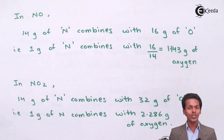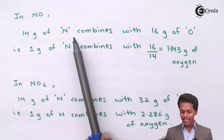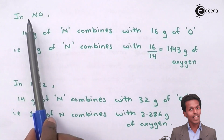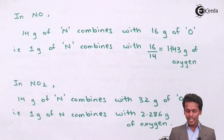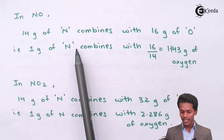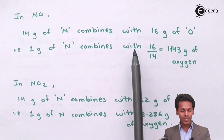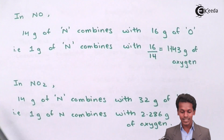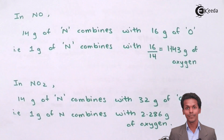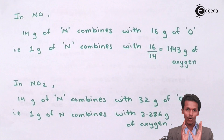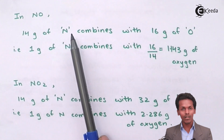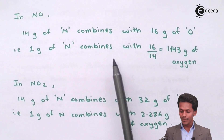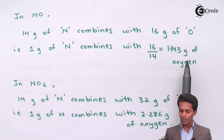In NO, that is nitrogen monoxide, 14 grams of nitrogen combines with 16 grams of oxygen to produce NO. So for 1 gram of nitrogen, the oxygen involved would be 16 divided by 14, that is 1.143 grams of oxygen being involved during the formation of NO.